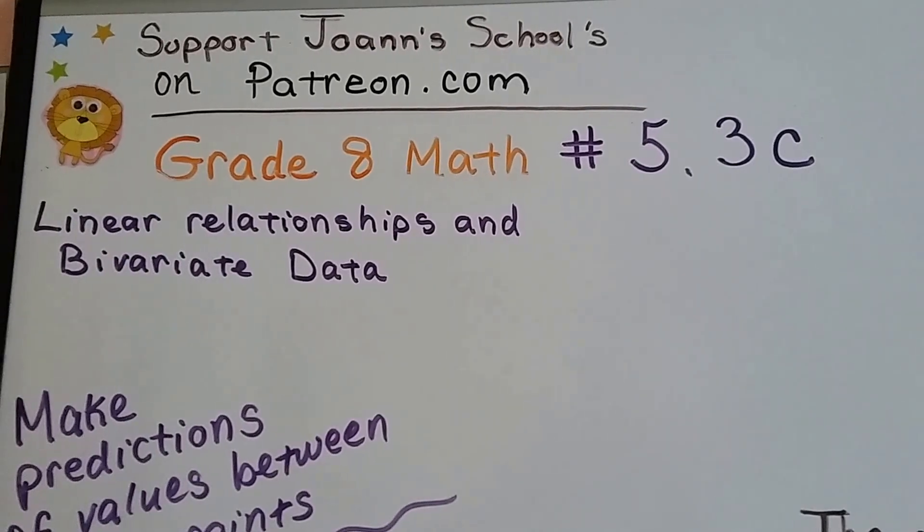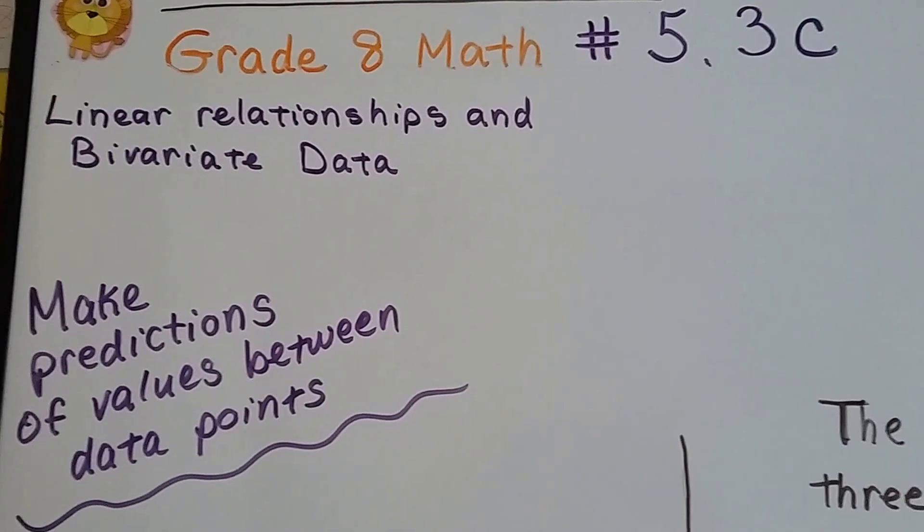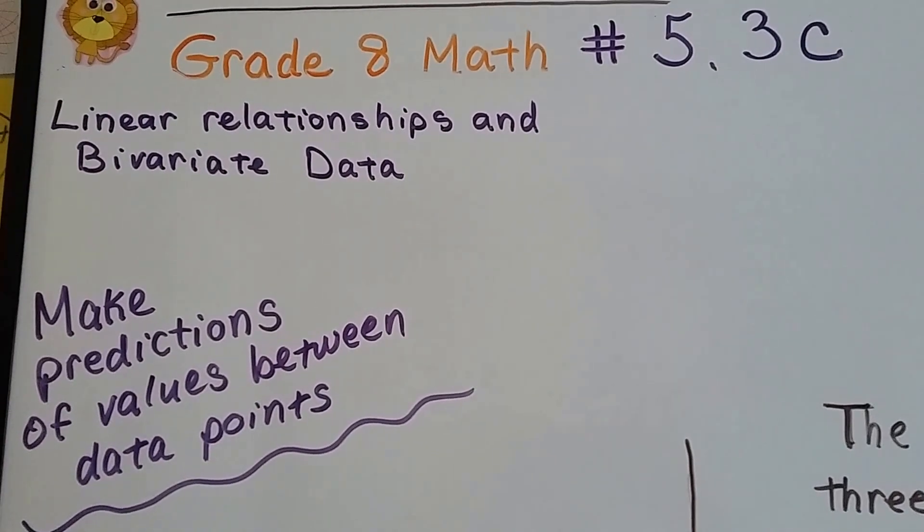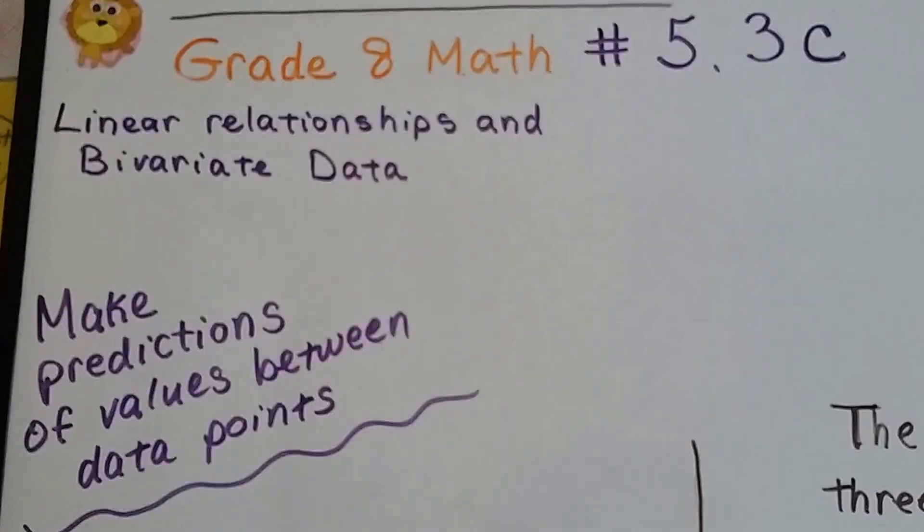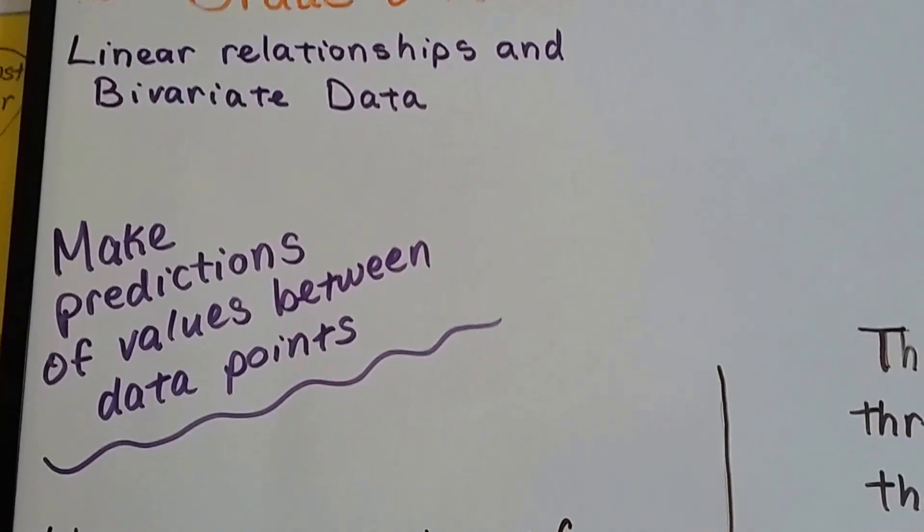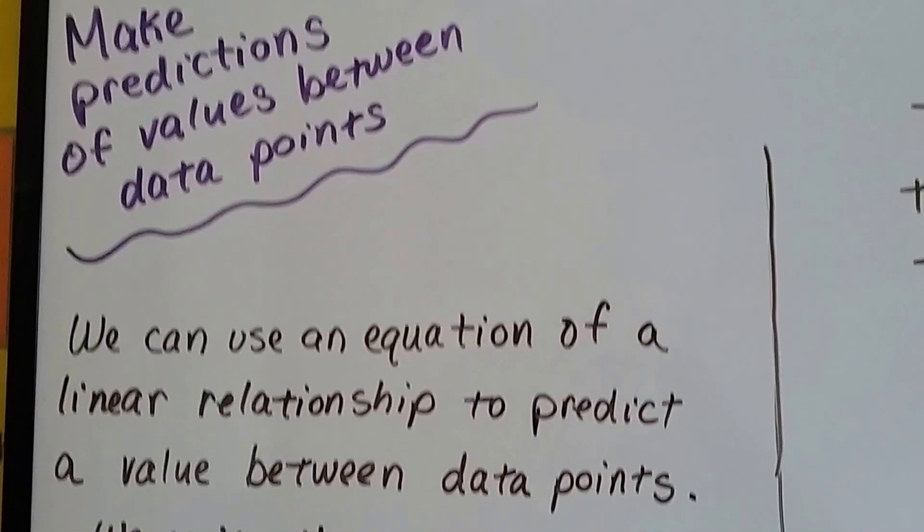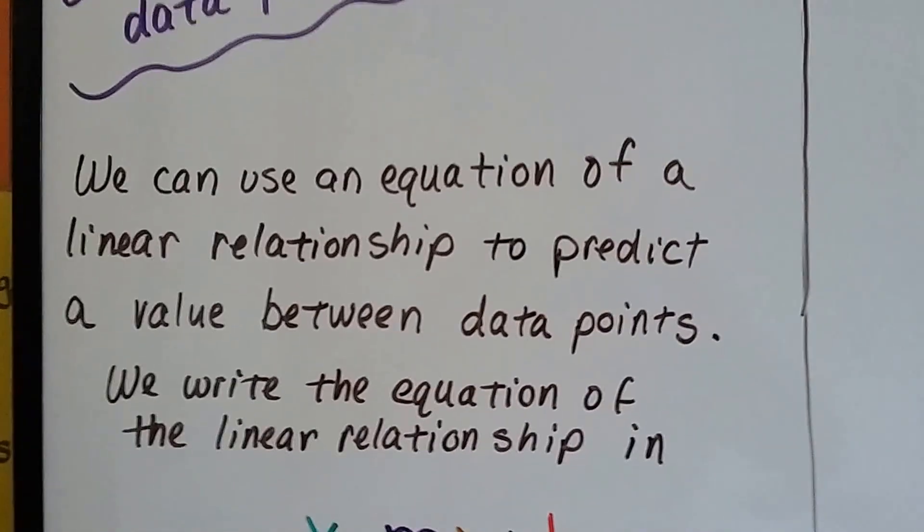Grade 8 math number 5.3c: make predictions of values between data points. We're slowly making our way through unit 5.3 and we're going to get to bivariate data in the next video. So we're working up our knowledge and our way there.